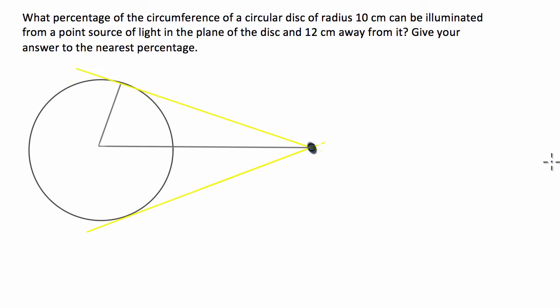So this particular question, what have we got here? It's asking us what percentage of the circumference of a circular disk of radius 10cm can be illuminated from a point source of light in the plane of the disk and 12cm away from it. Give your answer to the nearest percentage.